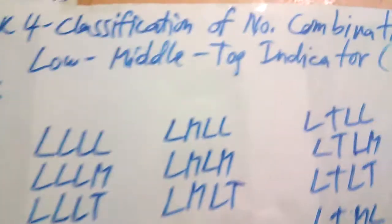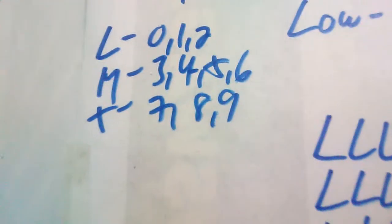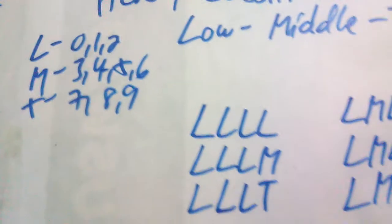We now proceed to another classification of number combinations — the low-middle-top indicator, or what we call the LMT. Just a quick review: low numbers refers to 0, 1, and 2; middle numbers are 3, 4, 5, and 6; and top numbers are 7, 8, and 9. These are the classifications of number combinations for the LMT.